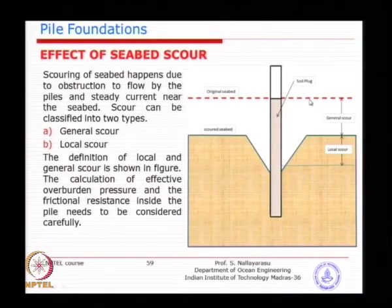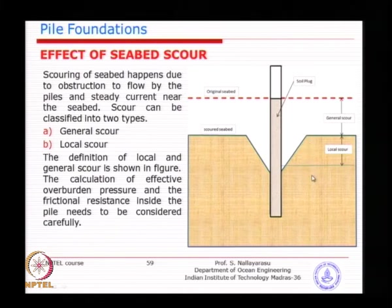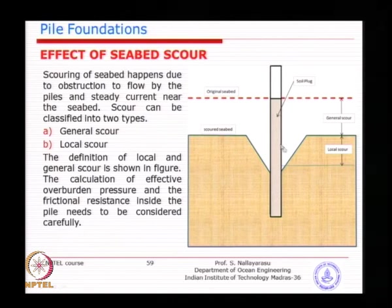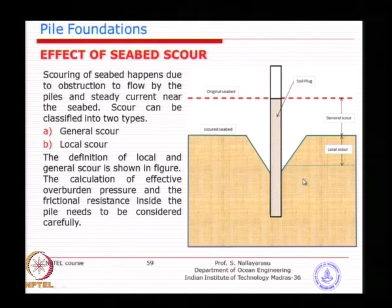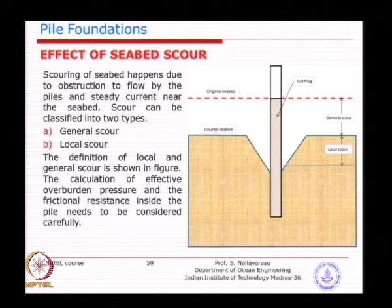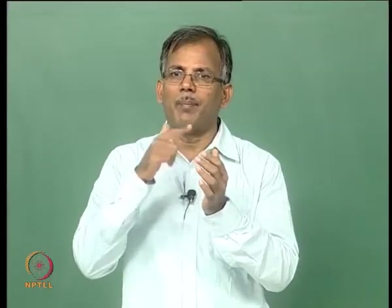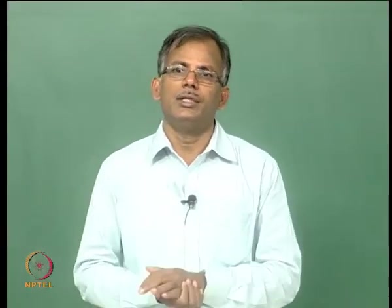If you look at the general scour, it is easy to understand — basically that much height is removed. Whereas for local scour, you are not going to remove the total depth of local scour from your overburden calculation, because some amount of soil still exists. You can see here a triangular wedge, so you could take advantage of that. We will see the calculations a little later. With that, I think we could conclude the understanding of vertical capacity related to displacement — we had Tz and Qz.